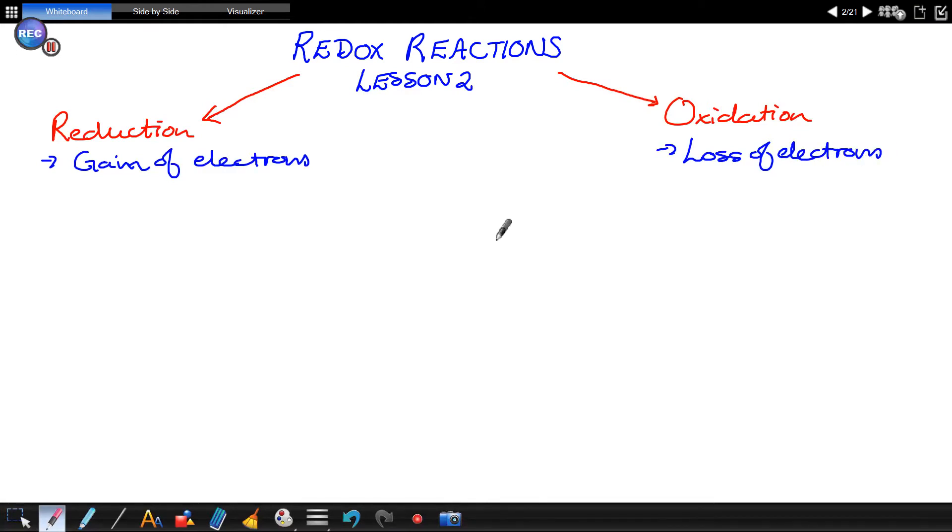And the quick way to memorize this is to imagine a little lion with the name Leo that tries to growl, and all he gets out is a girl. Leo: Loss of Electrons is Oxidation. Girl: Gain of Electrons is Reduction. So this is a nice fun way to remember the definition of reduction and oxidation in terms of electron transfer.